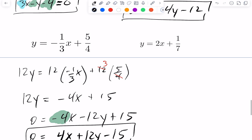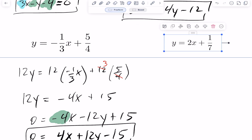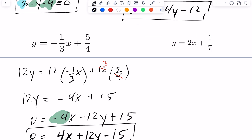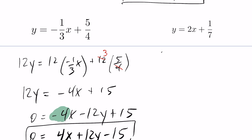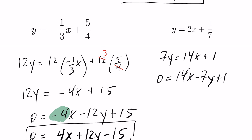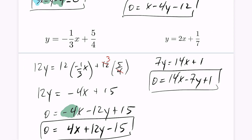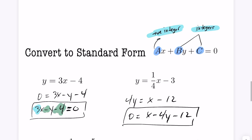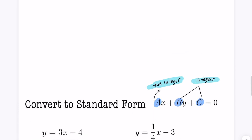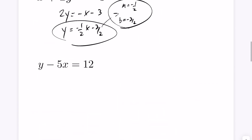For the last question, multiply across by 7, giving 7y equals 14x plus 1. Bringing the 7y to one side gives 14x minus 7y plus 1 equals 0, and now in standard form. That concludes today's lesson on going from standard form to slope-intercept form and back.